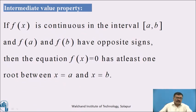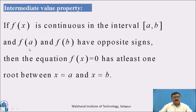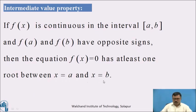Intermediate Value Property: If f(x) is continuous in the interval [a, b], and f(a) and f(b) have opposite signs, then the equation f(x) = 0 has at least one root between x = a and x = b.